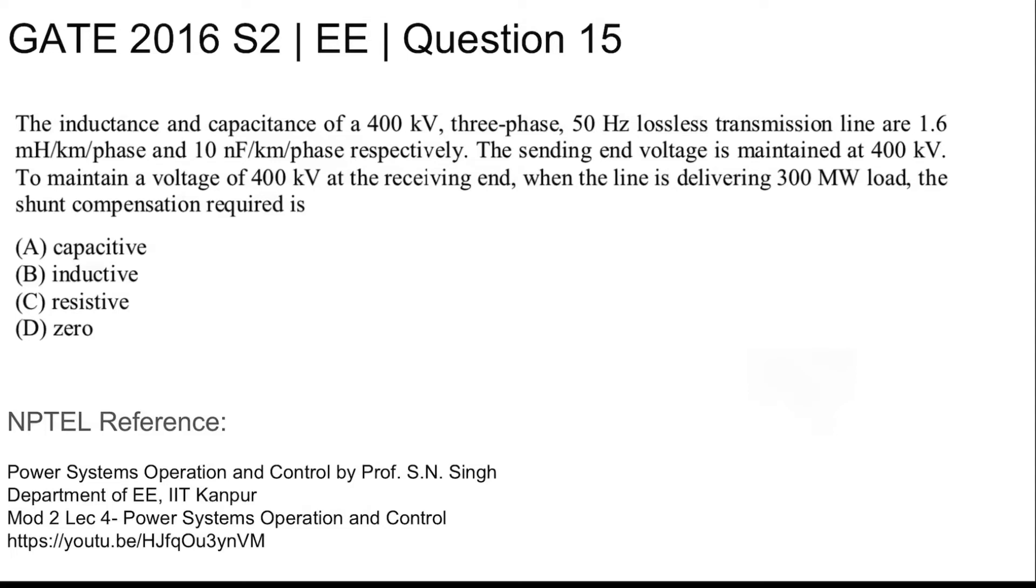This is GATE 2016 Set 2 Electrical Question Number 15. The inductance and capacitance of a 400 kV three-phase 50 Hz lossless transmission line are 1.6 mH per kilometer per phase and 10 nF per kilometer per phase respectively. The sending end voltage is maintained at 400 kV. To maintain the voltage at 400 kV at the receiving end when the line is delivering 300 MW load, the shunt compensator required is: capacitive, inductive, resistive, or zero.